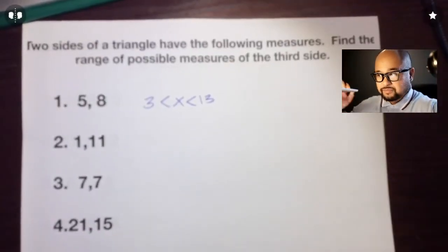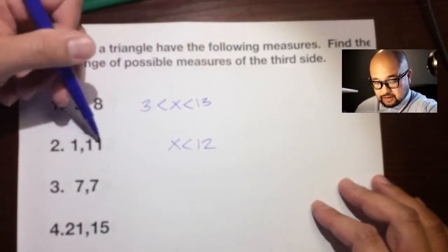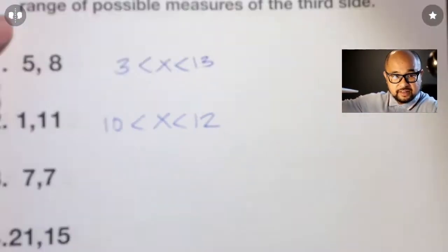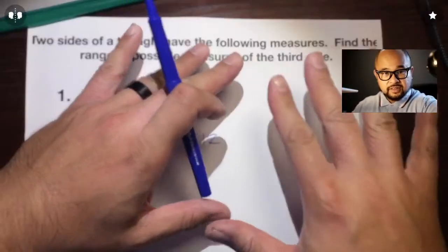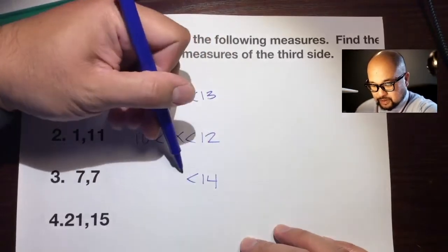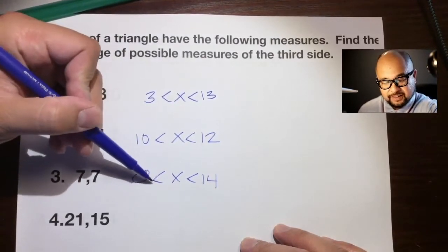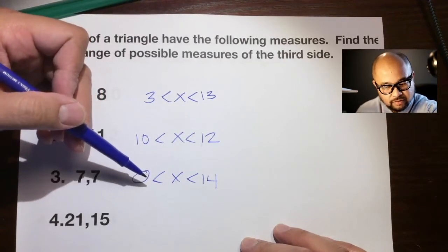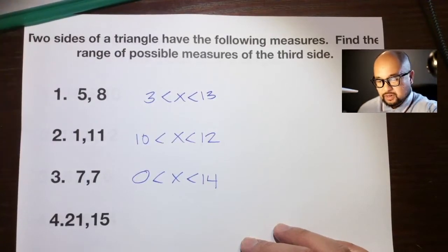For sides 1 and 11: add and subtract. One plus 11 is 12, so less than x, and 11 minus 1 is 10. So that third side has to be less than 12 but greater than 10. For sides 7 and 7: the maximum is 7 plus 7 = 14, less than x, and the minimum is 7 minus 7 = 0. Can it be 0? No — that's why it's not less than or equal to. It has to be greater than 0, so anywhere from just above 0 up to just less than 14.